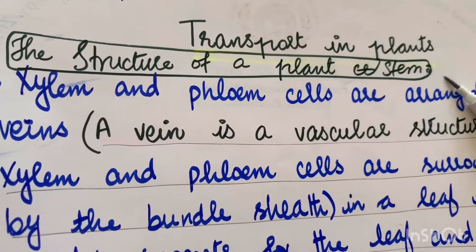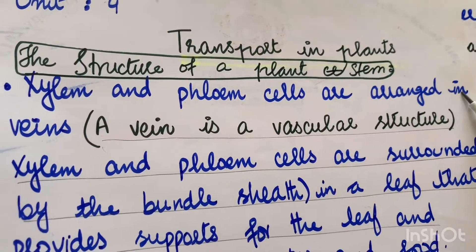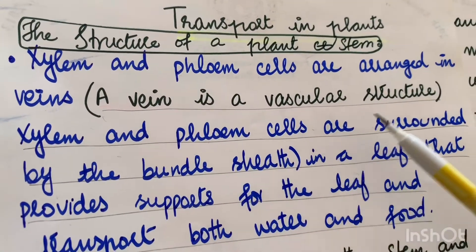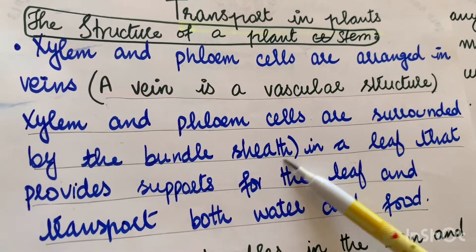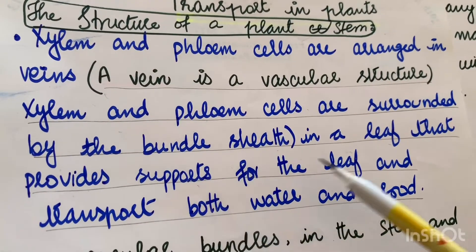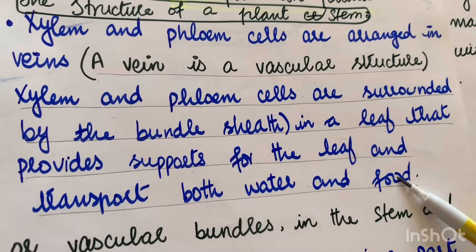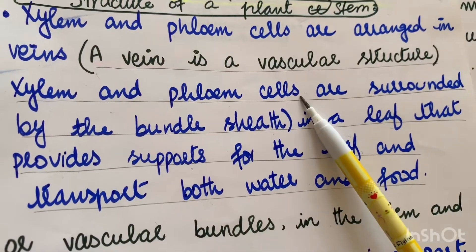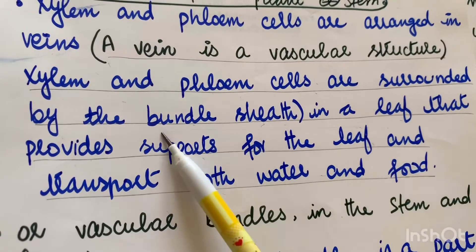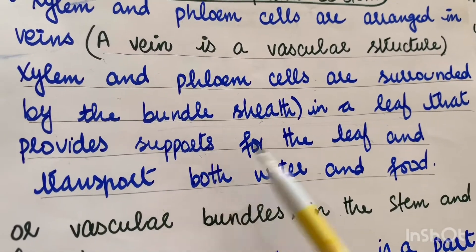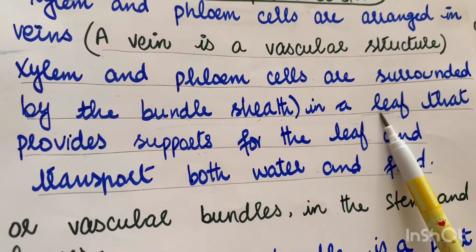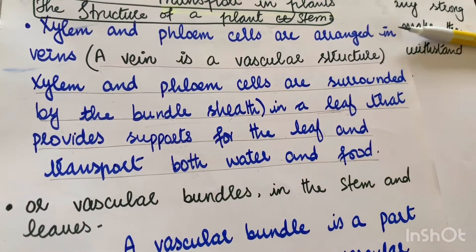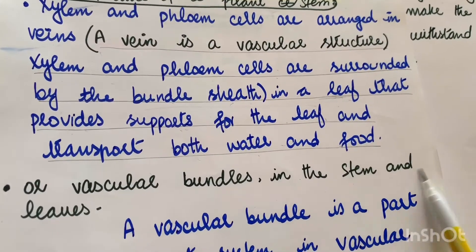In the structure of a plant stem, xylem and phloem cells are arranged in veins. A vein is a vascular structure. In a leaf, xylem and phloem cells are surrounded by the bundle sheath, which provides support for the leaf and transports both water and food. So the bundle sheath not only provides support for the leaf but also transports water and food.